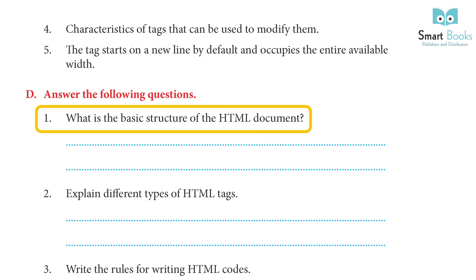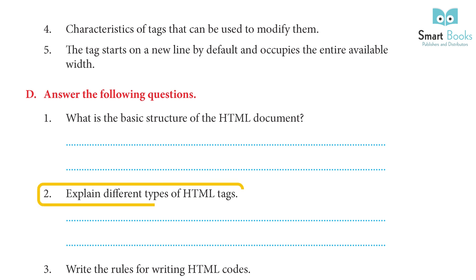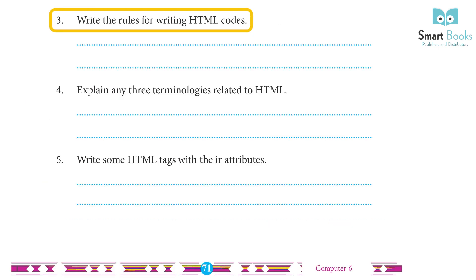Answer the following questions: 1. What is the basic structure of the HTML document? Answer: The HTML file is a text document that contains markup tags. The markup tags instruct the web browser on how to display the web page. 2. Explain different types of HTML tags. Answer: Container tag, Empty tag, Block level tag, Text level tag.